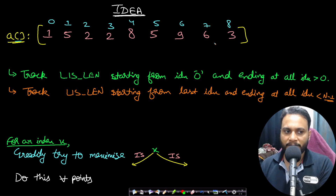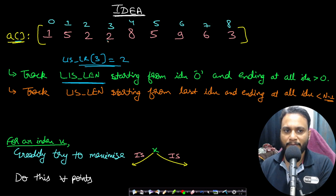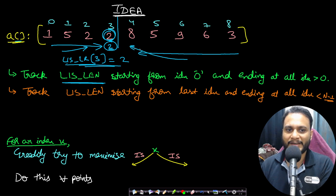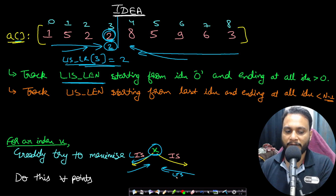The idea is: first, find the LIS length from left to right at each index. For example, LIS length from left to right at index 3 equals 2 means that from the beginning to index 3, the LIS length is 2. I also find the LIS length from right to left at each index. Then for each candidate peak element, I add the LIS from the left and LIS from the right to determine the maximum mountain array size if that element is selected as the peak.